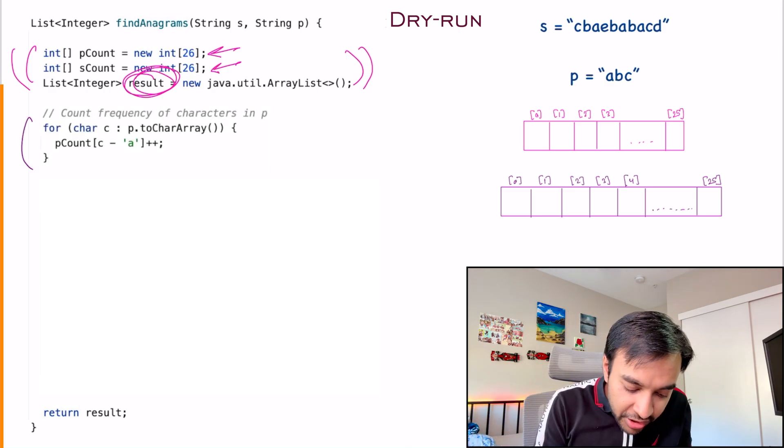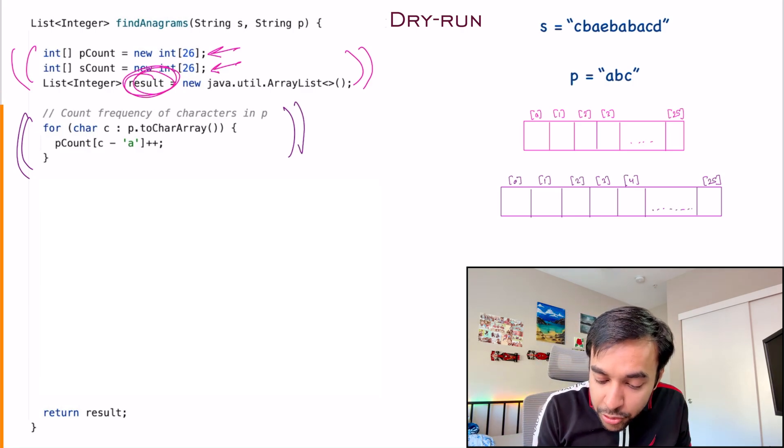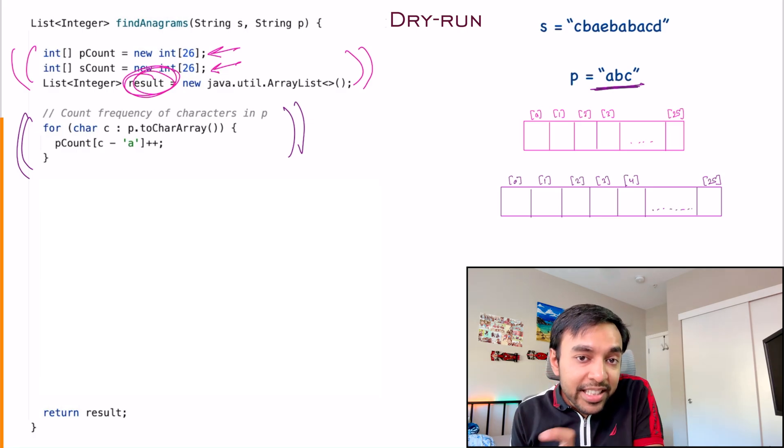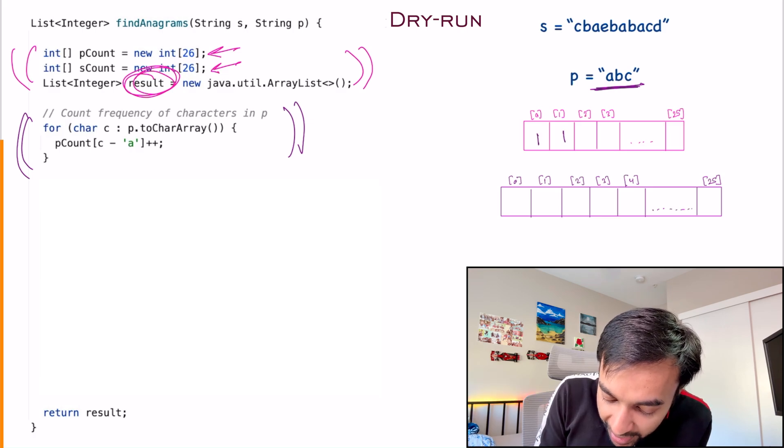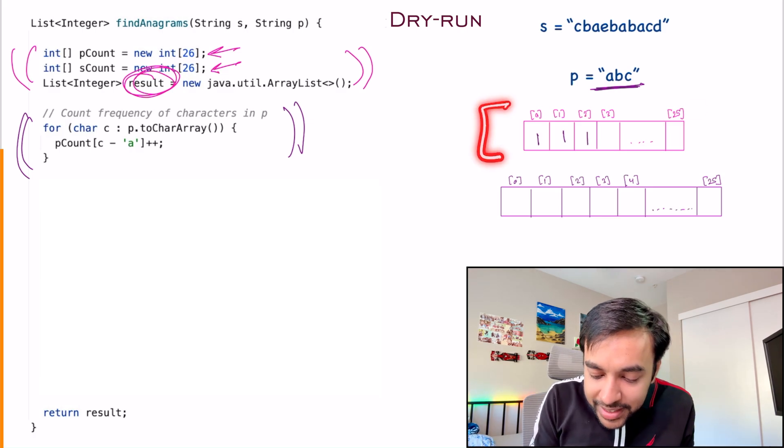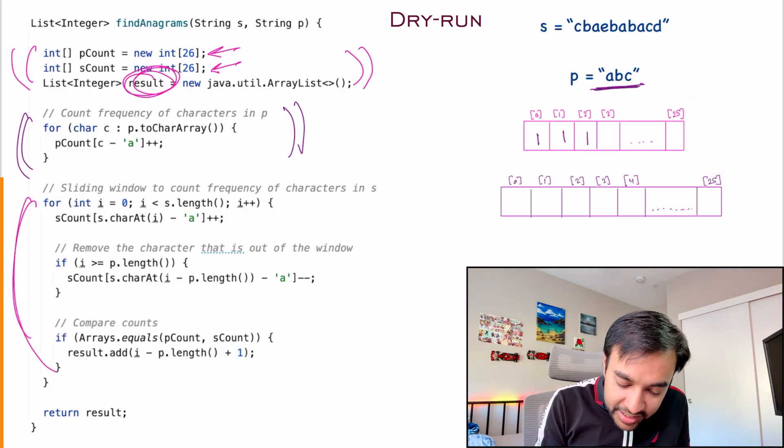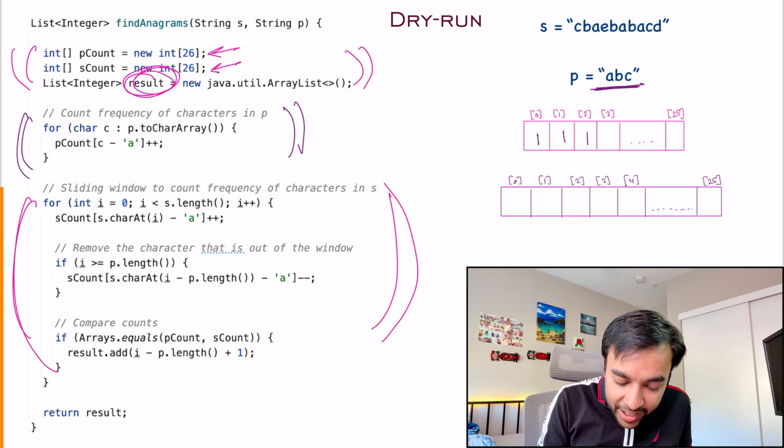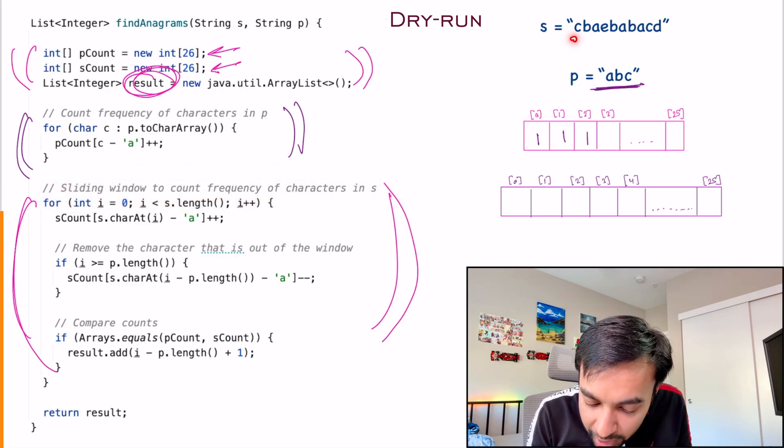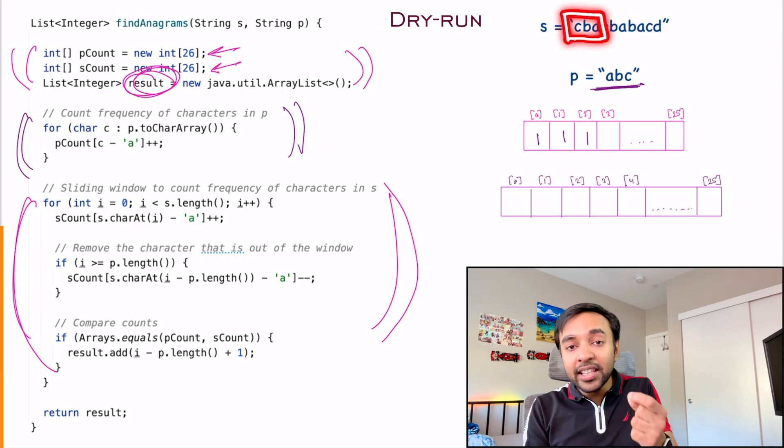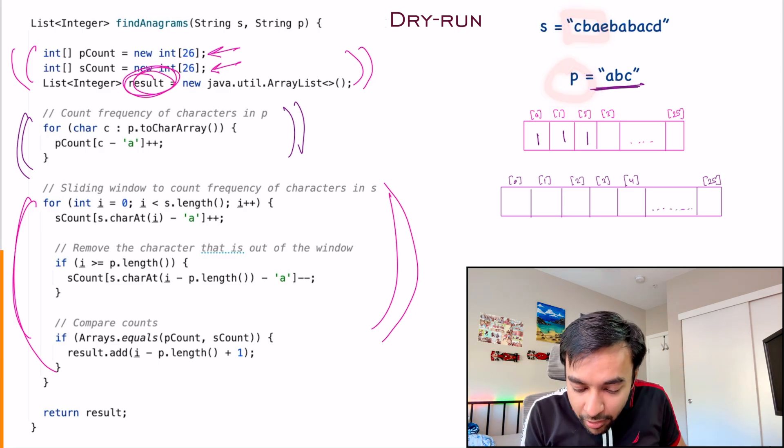My setup is now ready. What do I have to do? First of all, I have to count the frequency of each of the characters in the string P. So I'm iterating over each of the characters in this particular string. And what will happen? I will have one A, one B, and one C. Now this frequency map is ready, and it will never change. In our next step, what do we do? We start a for loop that will actually be a sliding window. And for a sliding window, we try to take all of the characters of the length that I have for my string P.